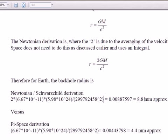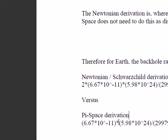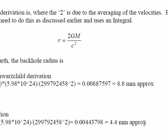And if we use the pi space derivation it's a similar formulation. We don't have the 2 as I said already. So what we get is 4.4 millimeters. So in other words if we put all the mass of the Earth into a radius of 4.4 millimeters according to the pi space theory you'll form a black hole.